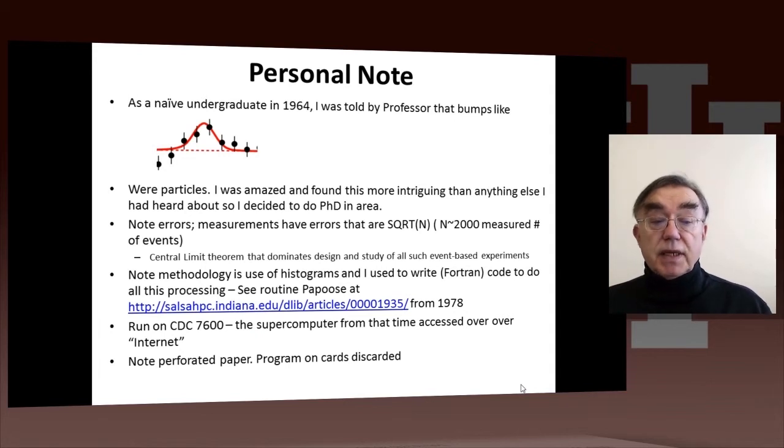So I've already pointed out about errors. Errors are the square root of the number of events in the bin. And there is a result called the central limit theorem, and also the law of large numbers, which will basically describe the design and study of such experiments.